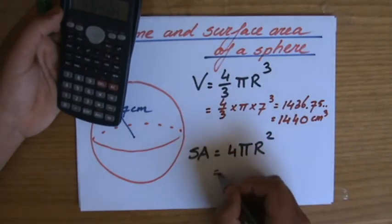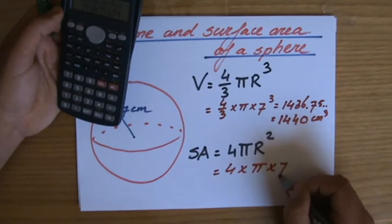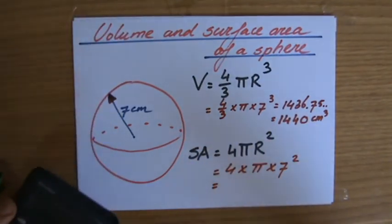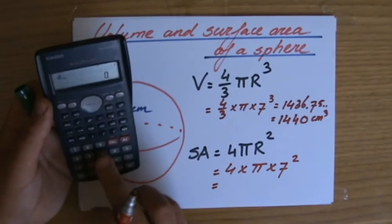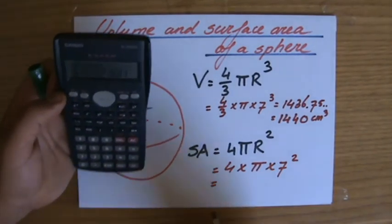Surface area: 4 times pi times the radius squared. Again, that formula they give to you in the question. 4 times pi times 49 equals...